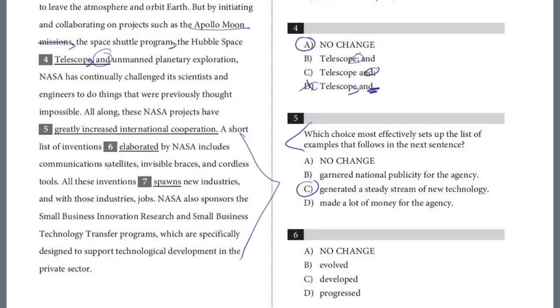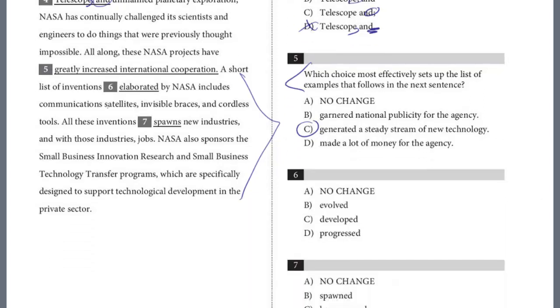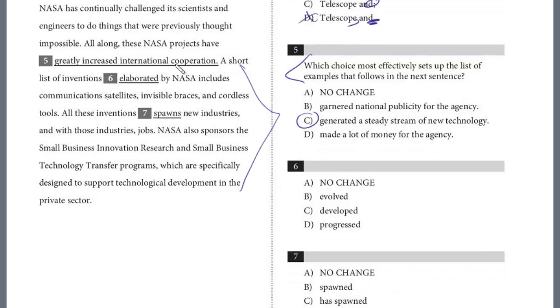And then six. This is a diction question. A short list of inventions elaborated by NASA. Do we want to elaborate? Elaborate, this is a correct word usage. Elaborate means to give more details. Would you elaborate on your point? This certainly doesn't apply here. A list of inventions developed by NASA, right? Developed is the best choice. And let's take a look, we'll do one more, and then we'll stop this video.